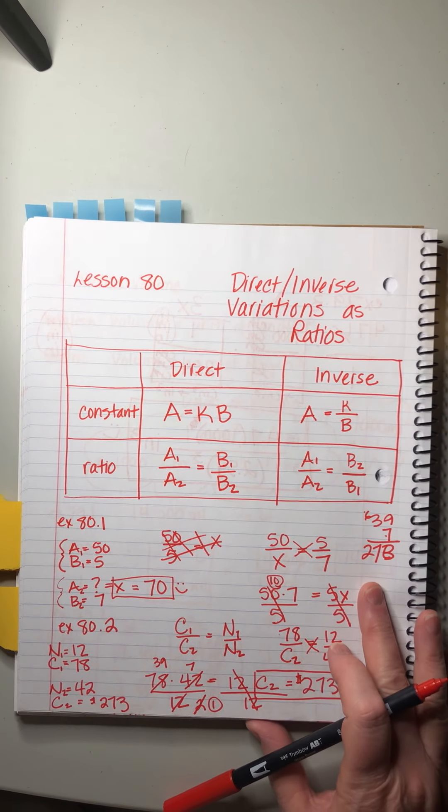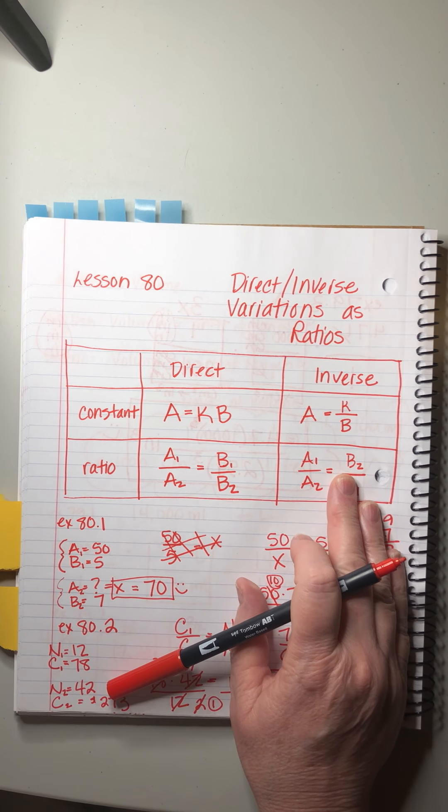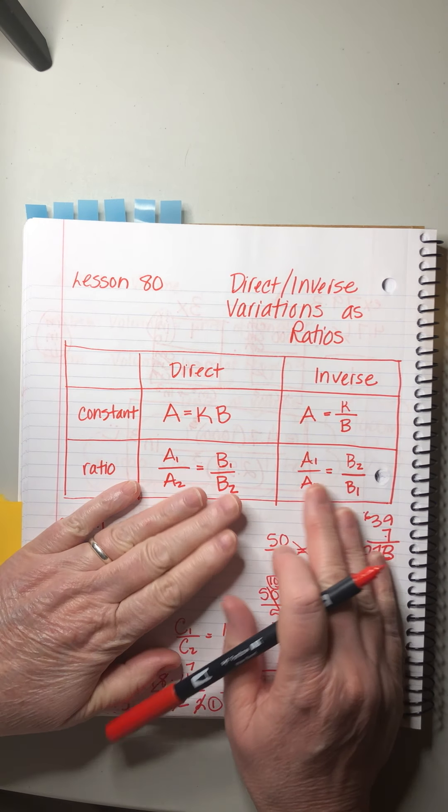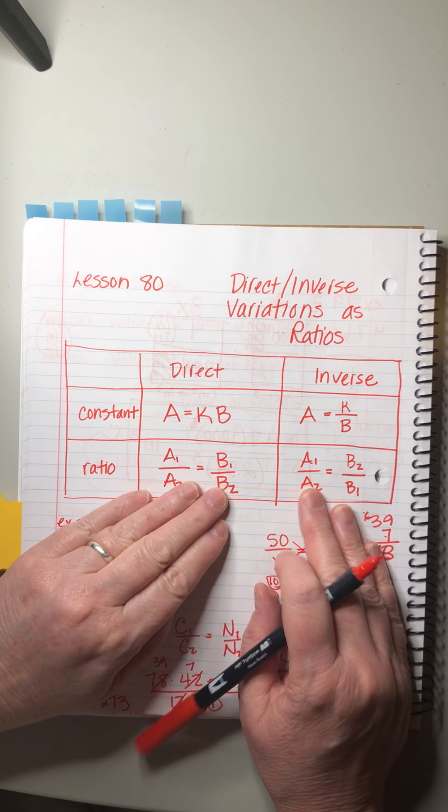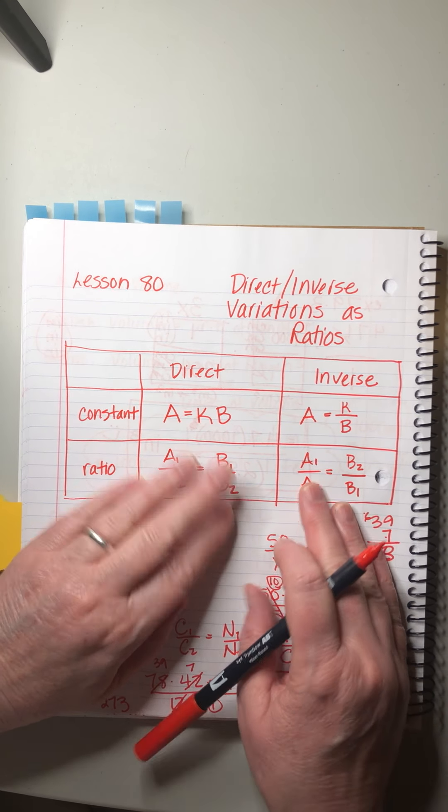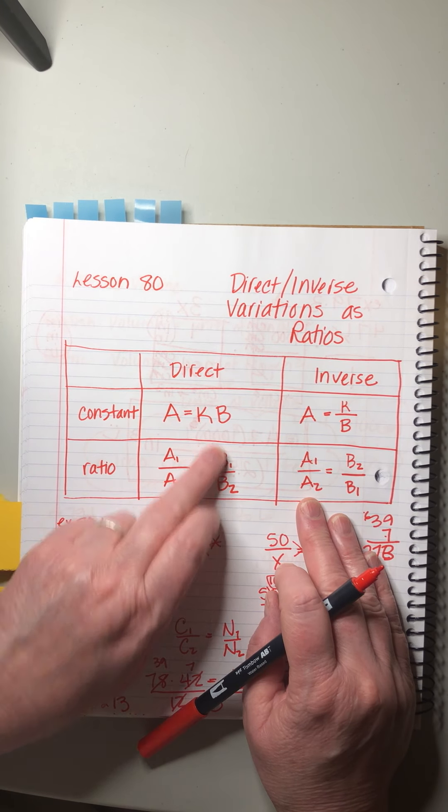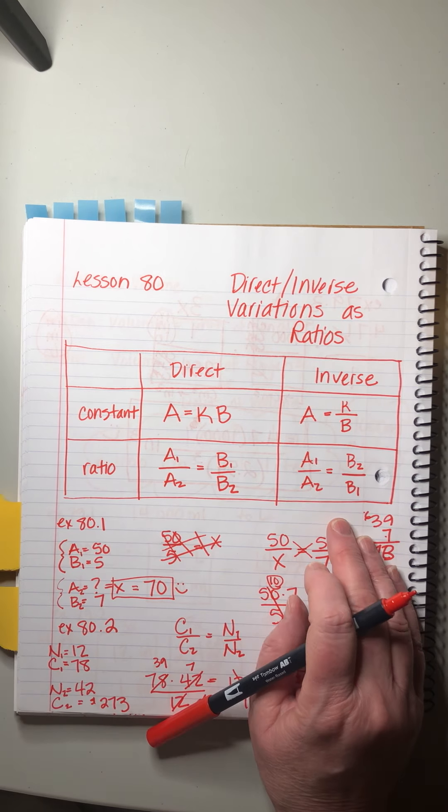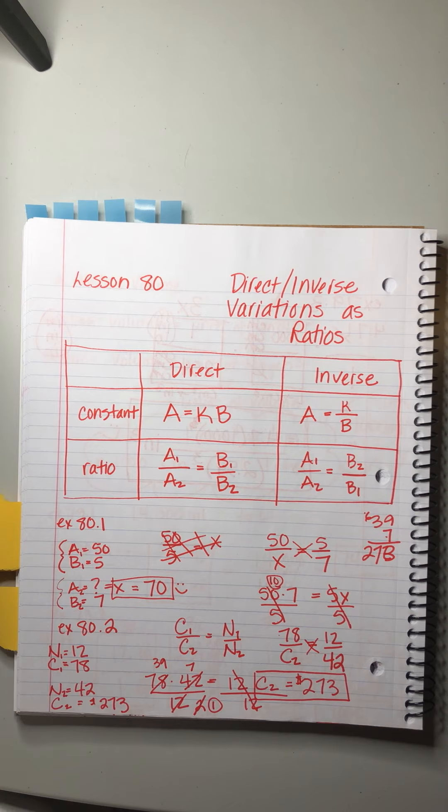So I don't know how you feel about it, but in some ways I really like this ratio method. It seems a little more direct, a little to the point. We don't have this random K floating around. I like this because I find this really easy for me to remember. The A's and the B's and then you just flip the B's. So have some fun with that lesson 80 and I will catch you on the other side.